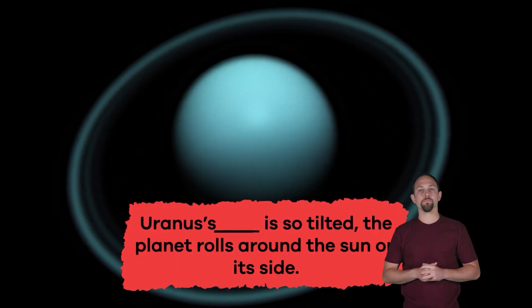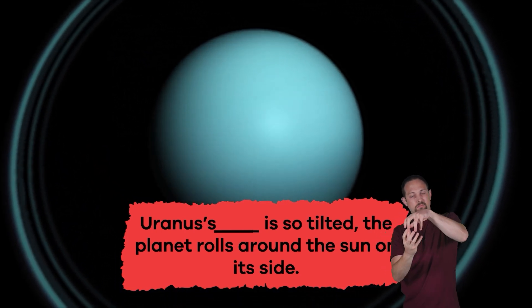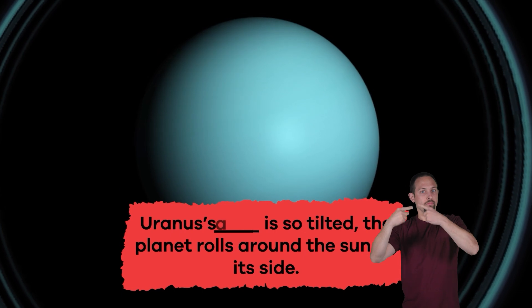Fill in the blank. Uranus' blank is so tilted, the planet rolls around the Sun on its side. Axis.